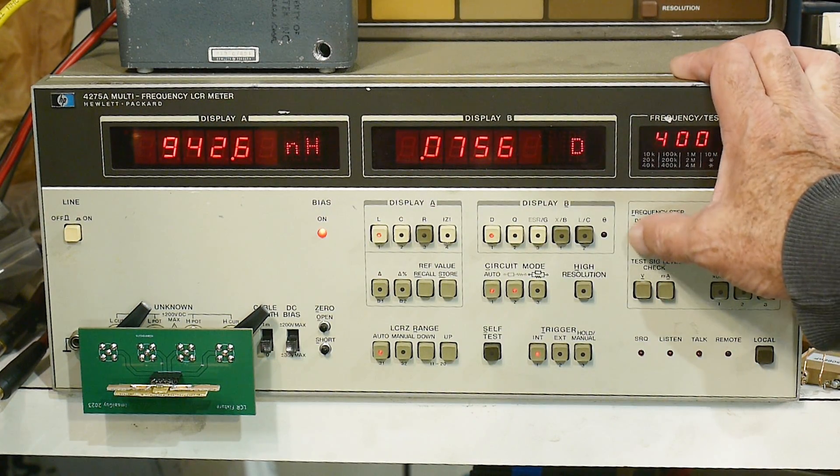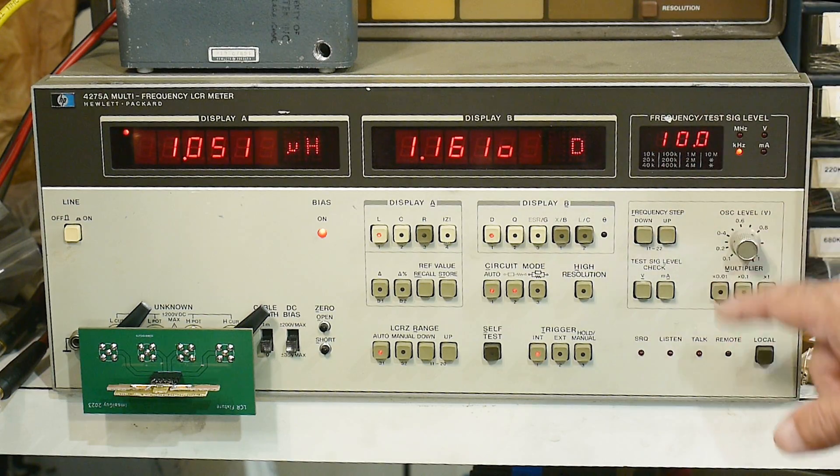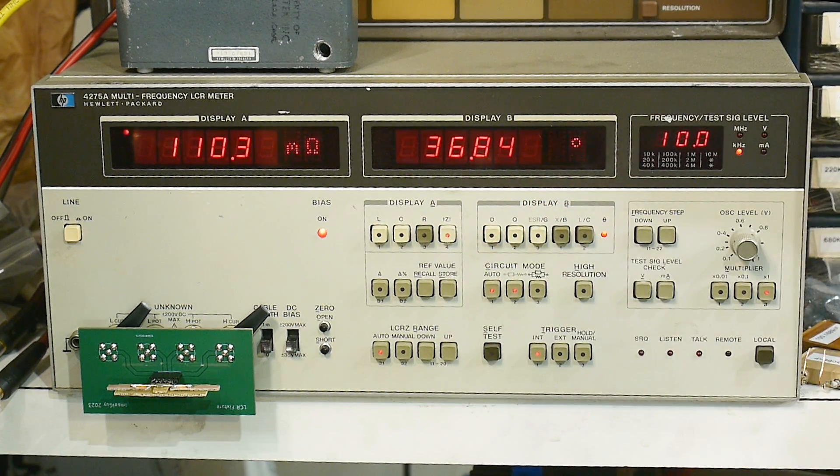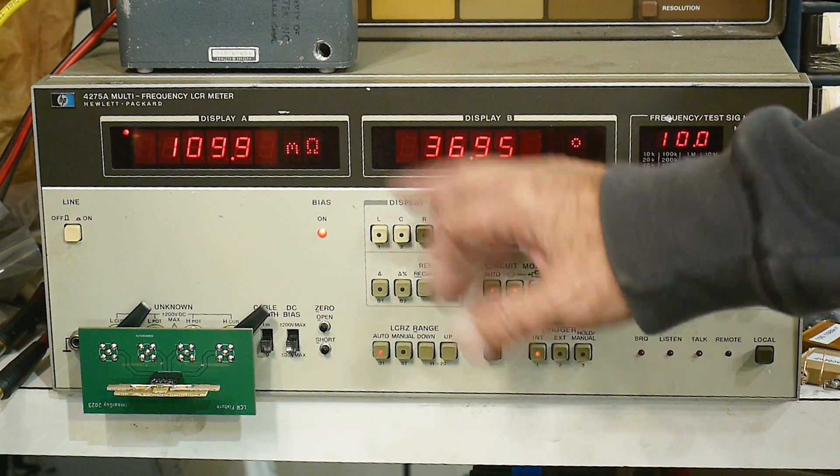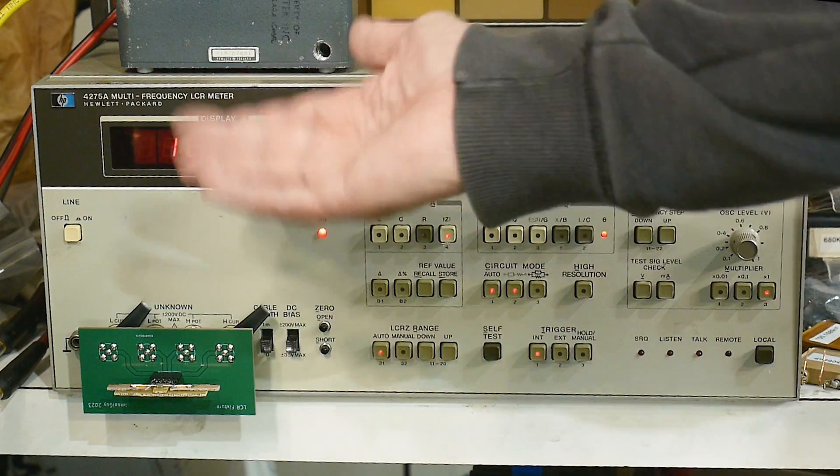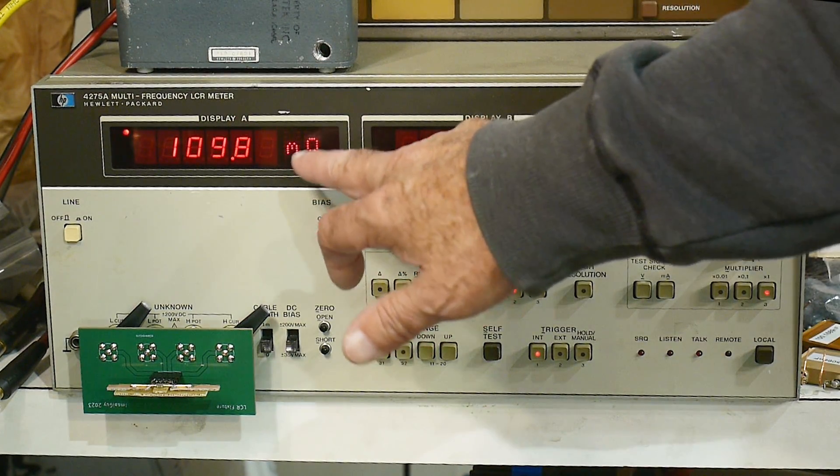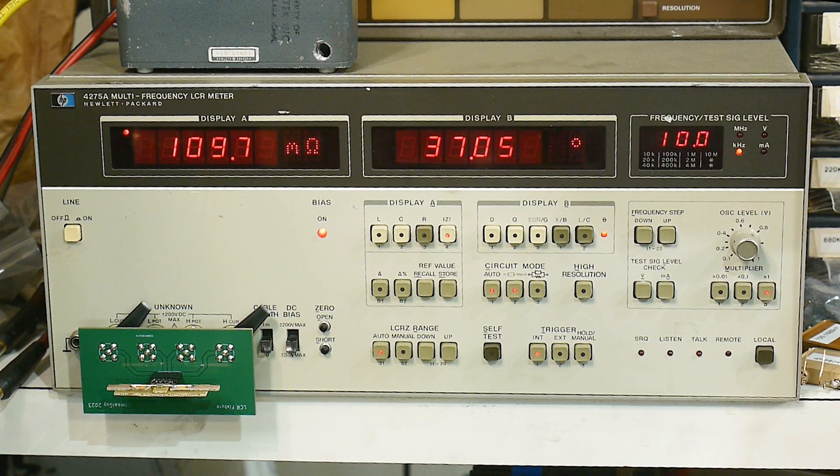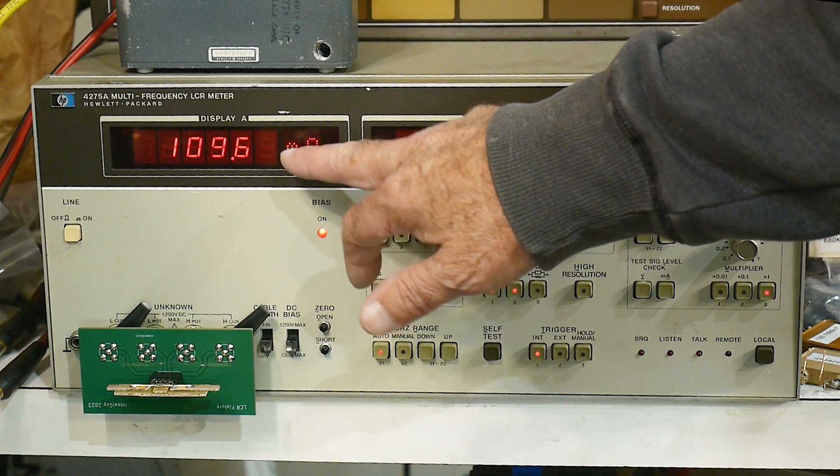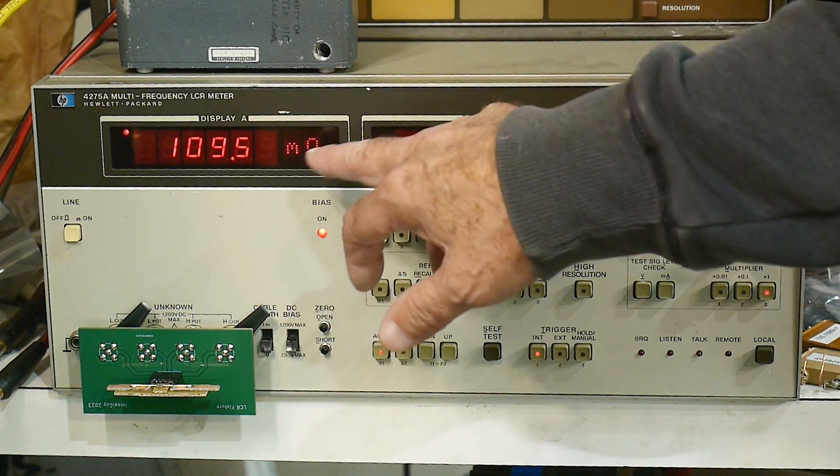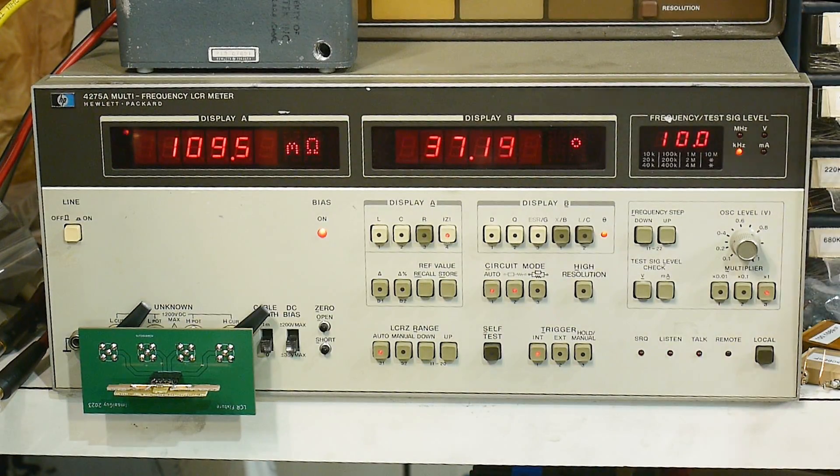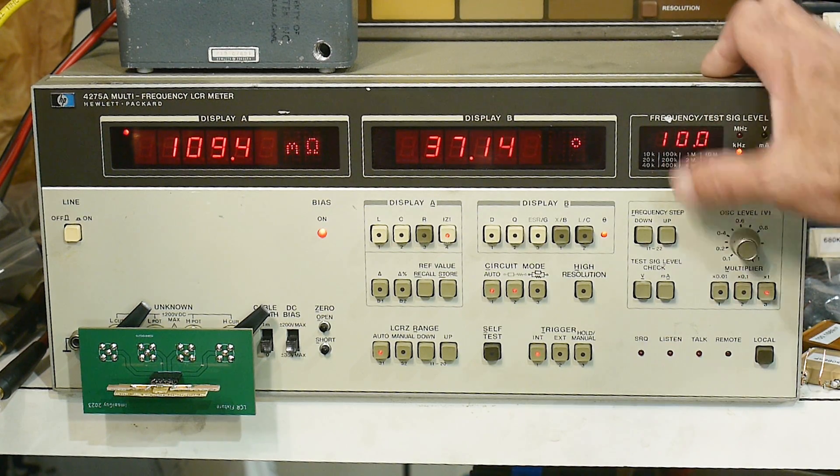Now, one of the really interesting things, let's run it back down to 10 kilohertz. Let's measure the Z. This is the absolute value of the magnitude. It's measuring very low ohmage. This is milliohms, 109 milliohms, otherwise 0.1 ohms. That's at 10 kilohertz.